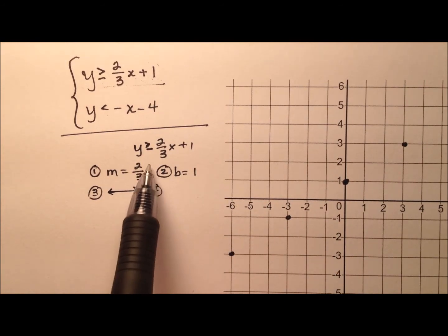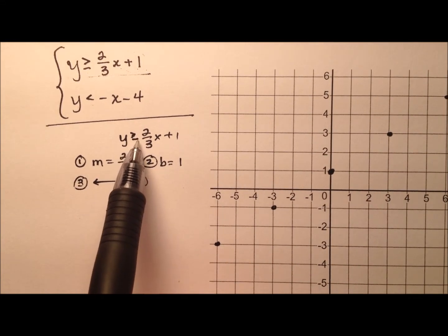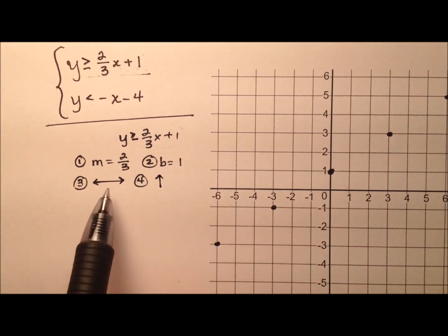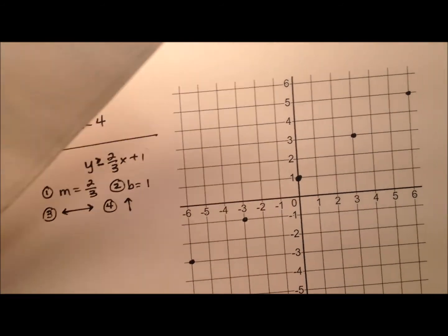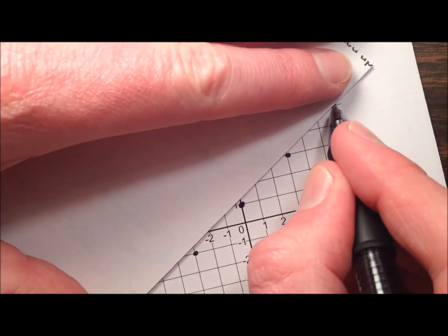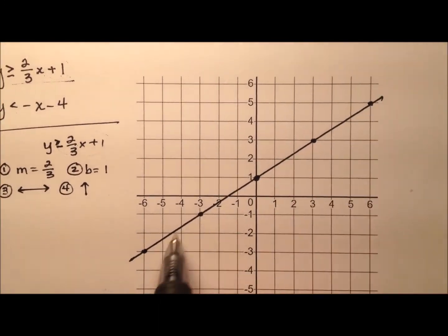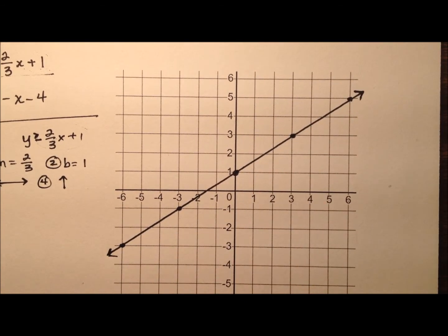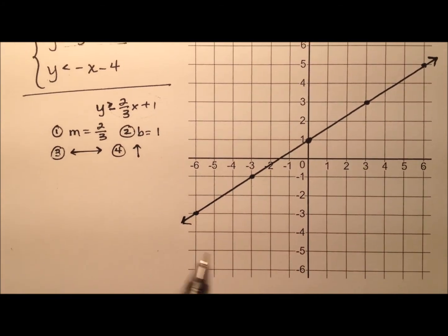The fourth piece of information is: are we going to shade above the line, or are we going to shade below the line? Since y is greater than this 2 thirds x plus 1, we'll actually be shading above the line. So since it's a solid line, I'm going to grab a straight edge and draw that line solid, all the way down just like that, past the boundaries of the graph, and put little arrows on the end. So there's the first inequality. I'll worry about the shading after I have the other line done as well.